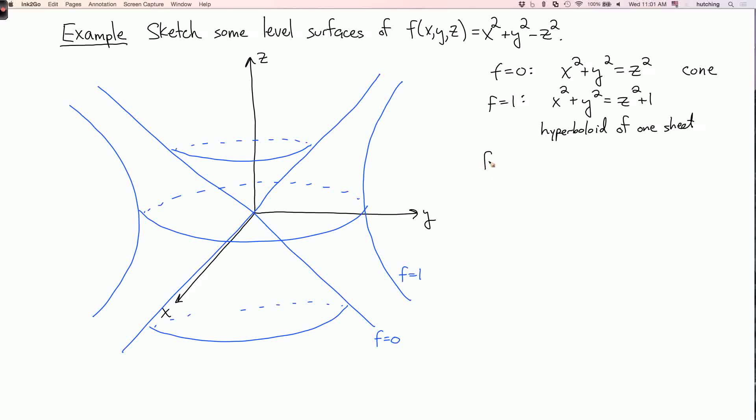We could also try f equals minus one. We get the equation x² + y² = z² - 1. And this is also a hyperboloid. But now, the right-hand side is negative if z is between minus one and one, and then there are no solutions x and y, so this is a hyperboloid of two sheets.